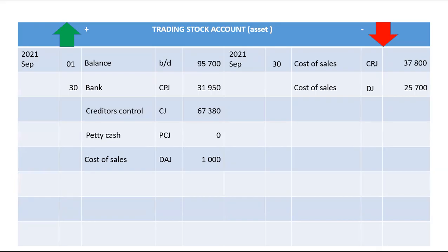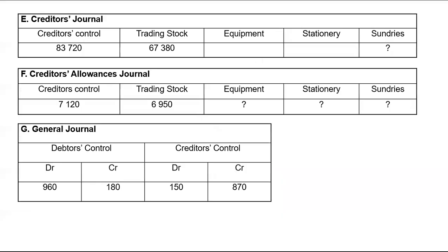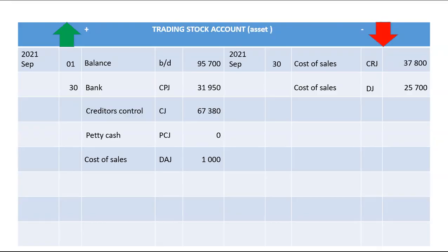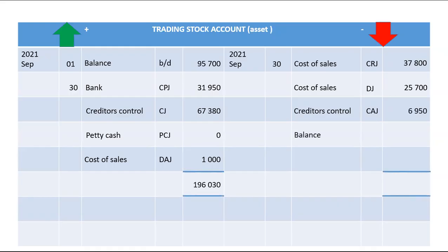The other reason trading stock decreases is when we as the business return goods back to the creditor. In this case, that will be 6,950, which is the total of your trading stock column in your creditors allowances journal (CAJ). That will decrease our trading stock account — write 'creditors control CAJ' with the amount of 6,950.